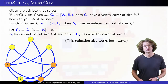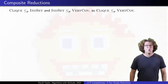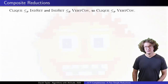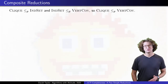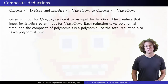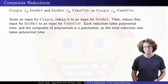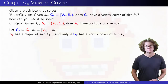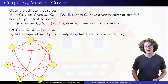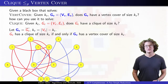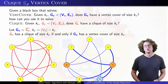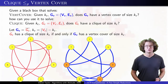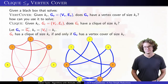This reduction also happens to work both ways. Now we know that clique reduces to independent set, and independent set reduces to vertex cover. These reductions are transitive — taking the composite of two polynomial time reductions gives us another polynomial time reduction. In this case, to reduce clique to independent set we took the complement of the graph, and then to go from independent set to vertex cover we changed the size we were looking for. Doing both of those things gives the reduction from clique to vertex cover.